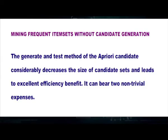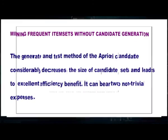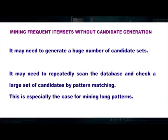Mining frequent item sets without candidate generation is very helpful. The generate-and-test method of Apriori considerably decreases candidate set sizes for efficiency benefits, but it bears two non-trivial costs: it may need to generate a large number of candidate sets, and it may need to repeatedly scan the database and check a large set of candidates by pattern matching — especially when mining long patterns.